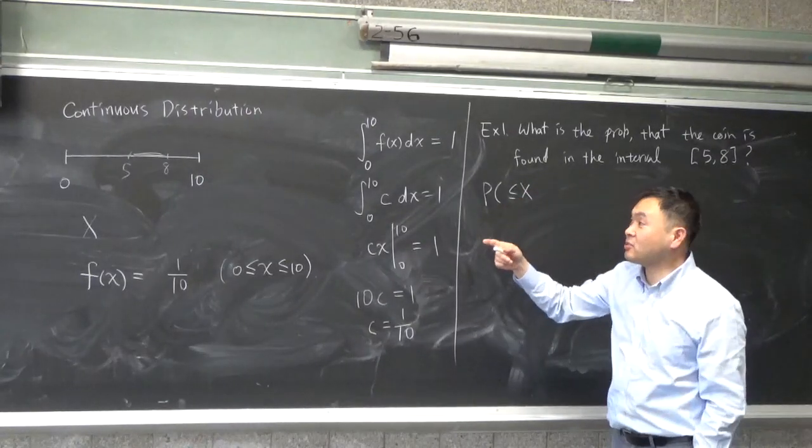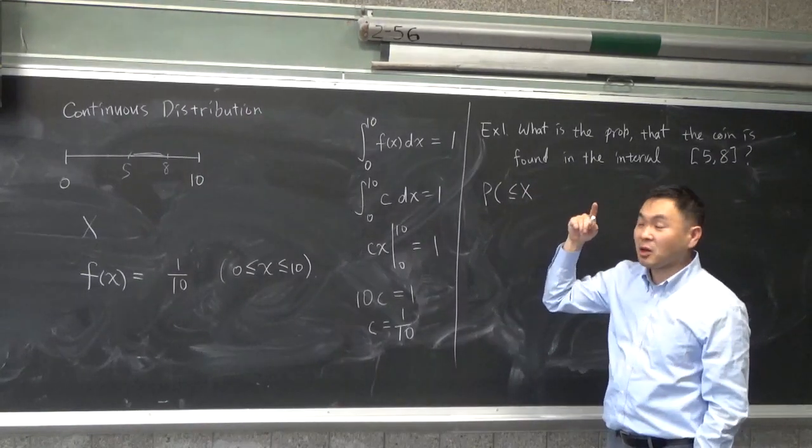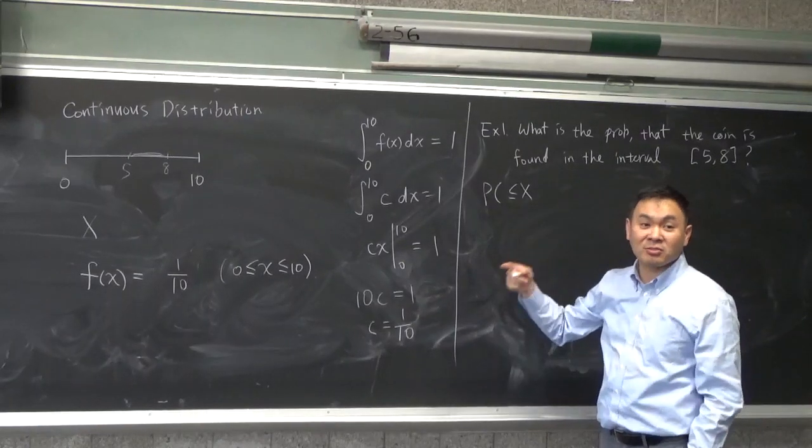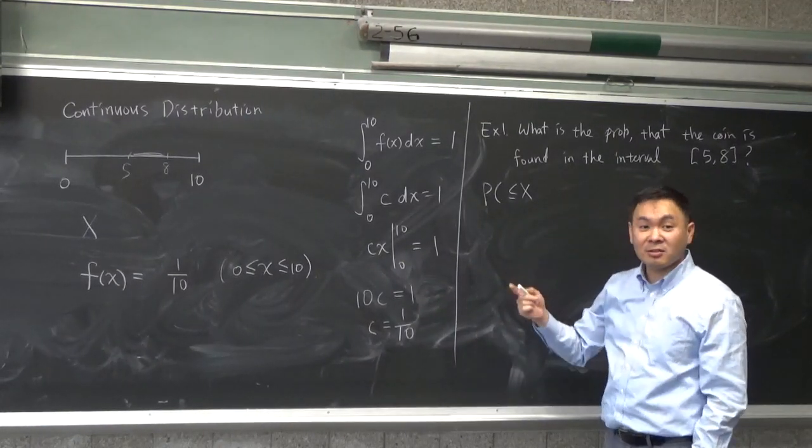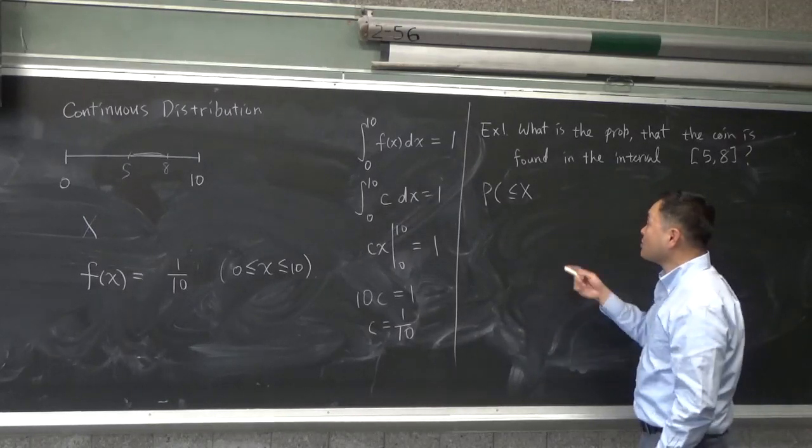For the discrete case, you would add p(x=5), p(x=6), and then 7 and 8. That's how you would calculate that. But instead, now you will have to use integrals.